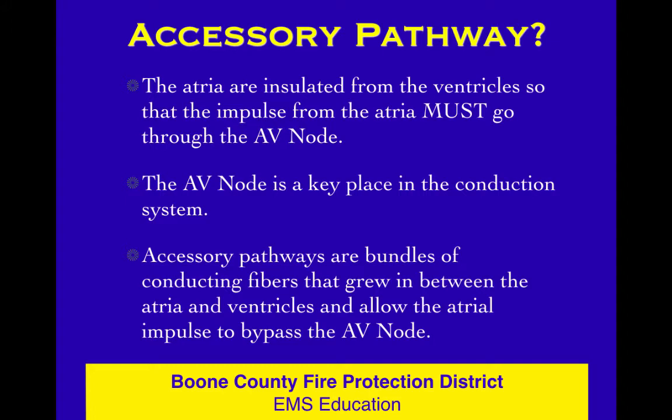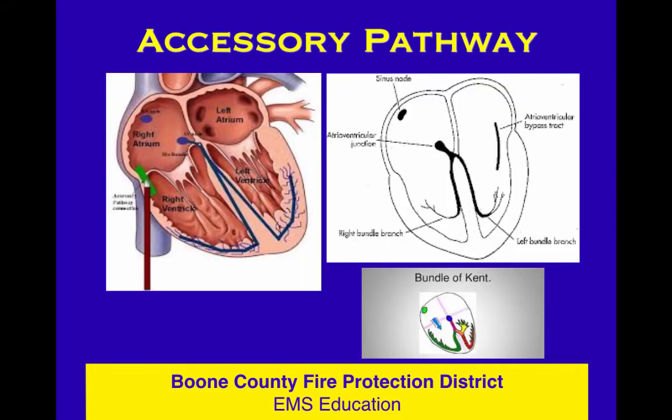The accessory pathway is a bundle of connecting fibers that grew in, or you were born with, that short-circuits. It runs between the atria and the ventricles across that insulating boundary and lets the impulse jump from the atria to the ventricles without going through the AV node. Here it is schematically in two or three different views.